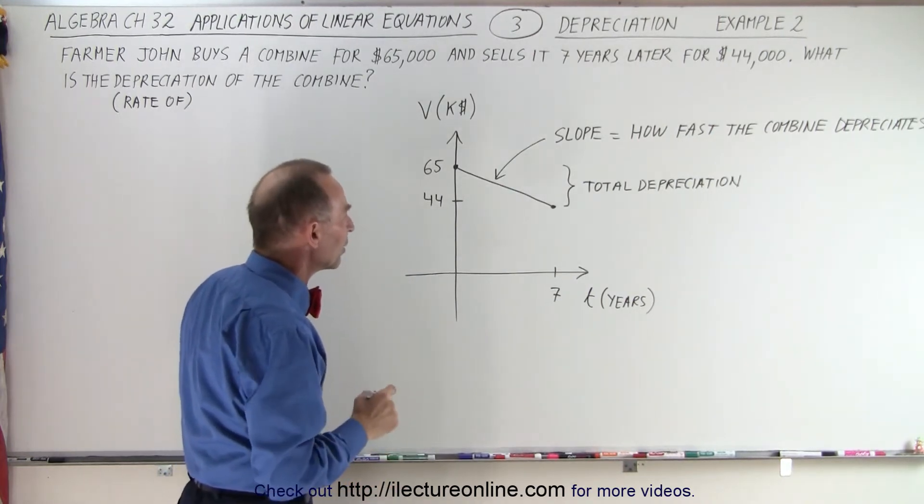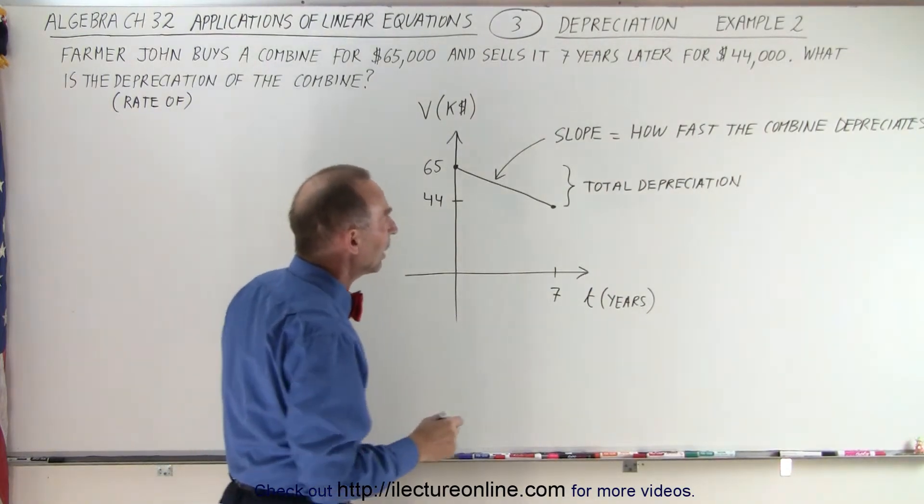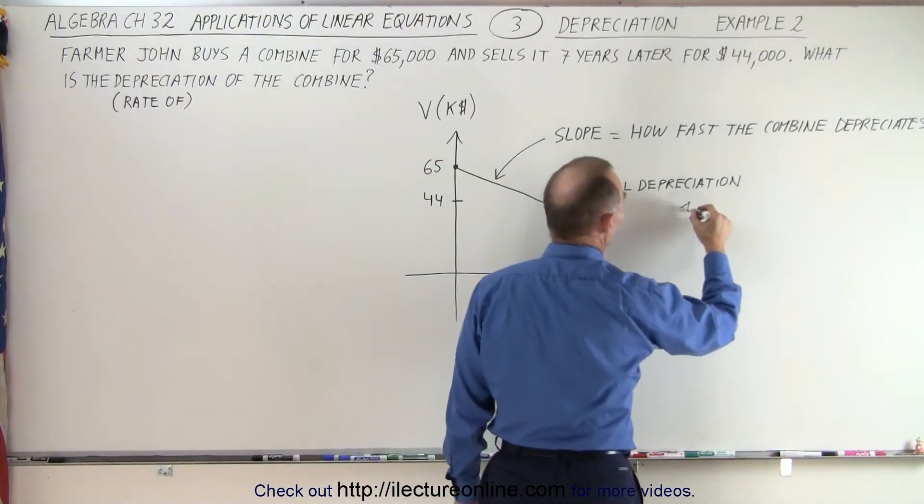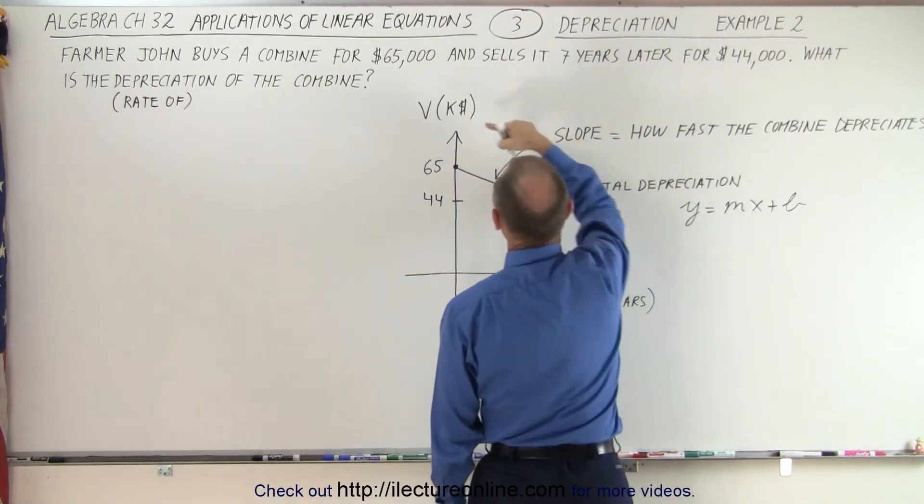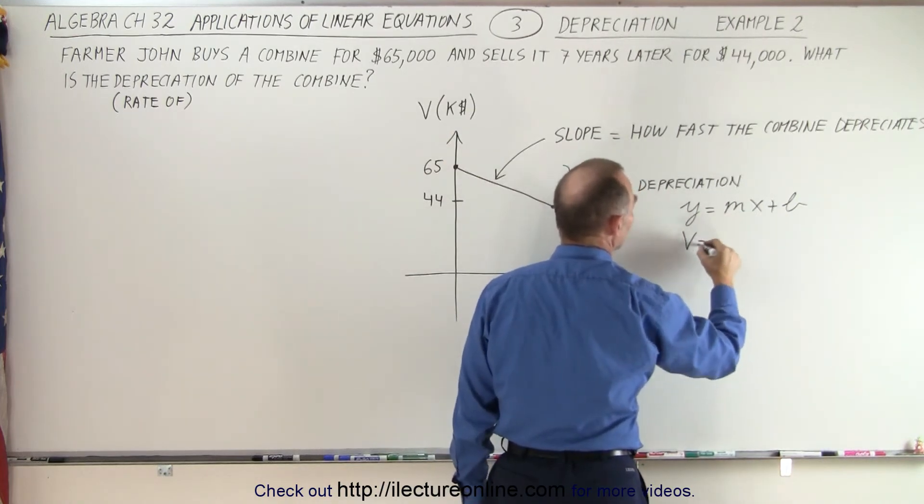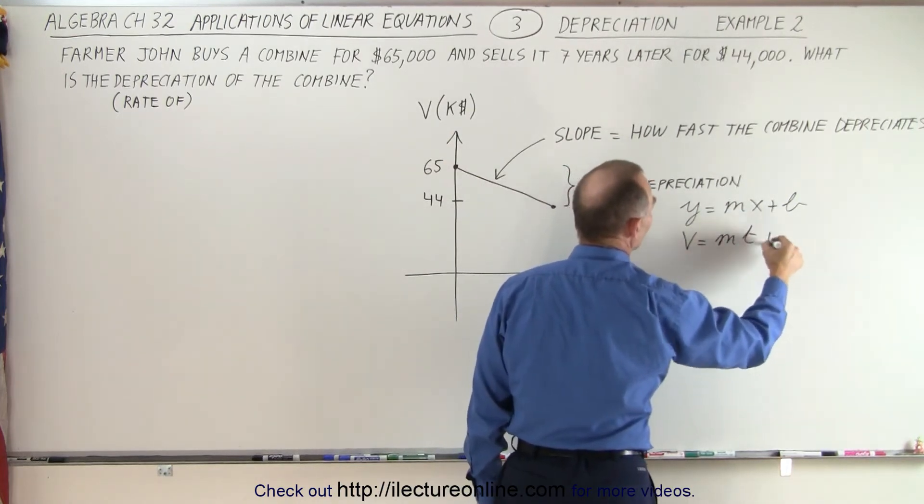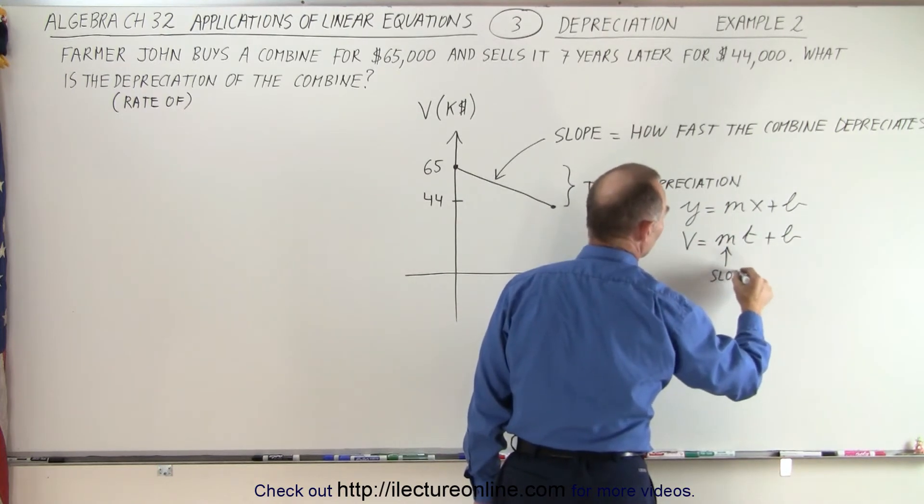So what we're trying to find here is the slope, because that's in essence what they're asking for. And it all comes from the equation of y equals mx plus b. Of course, we're going to change the y to a v for value and the x for t for time. So value equals the slope times t plus b.